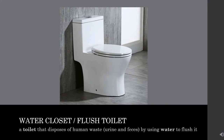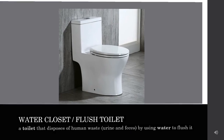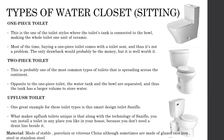A water closet or flush toilet is a toilet that disposes of human waste — urine and feces — by using water to flush it. Types of water closets or sitting toilets are one-piece toilet, two-piece toilet, and upflush toilet. All sanitary appliances are made of non-absorbent, non-corroding, smooth, and easily cleaned material.